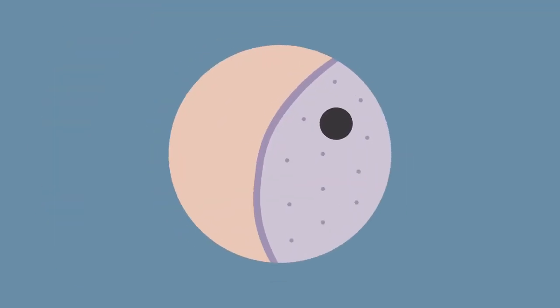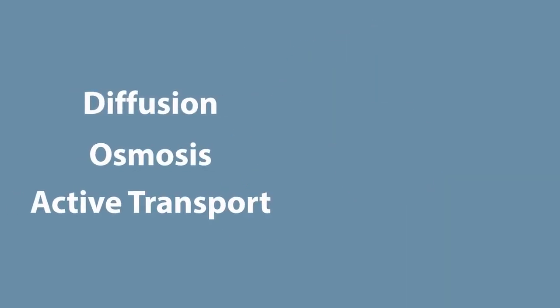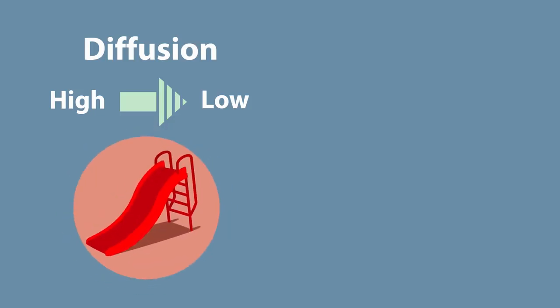So from these two parts, you should know how cells take in substances and get rid of waste by diffusion, osmosis and active transport. Just remember that for diffusion, the substance moves down the concentration gradient from a high concentration to a low concentration. Just think of a slide. You don't need any energy to go from high to low. It's easy.